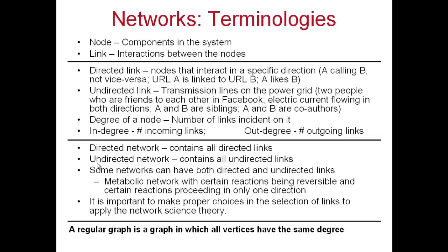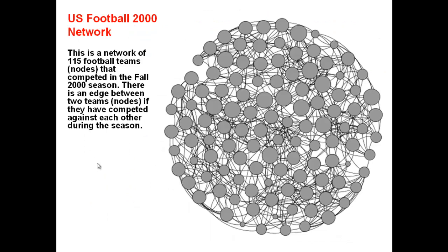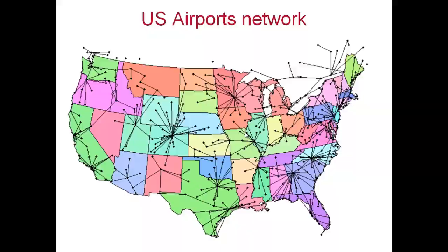Right now I am just introducing the networks. This is another network: a football network in the US in the year 2000. Colleges have football teams and each team plays against another team. This is a network of 115 teams — each team is modeled as a node, and there is an edge between two teams if they have played against each other during the 2000 season. There is no edge if they have not played against each other.